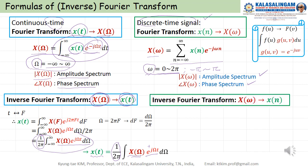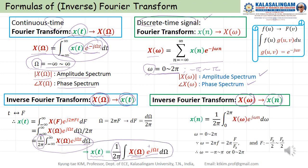The inverse transform also applies. X of Omega is given — how do we get the waveform X of N? From this we can find X of N equal to 1 over 2 pi, with Omega from 0 to 2 pi, of X of Omega times e to the power of plus J Omega N. This is the inverse Fourier transform of X of Omega, from which we can get the discrete-time signal X of N.